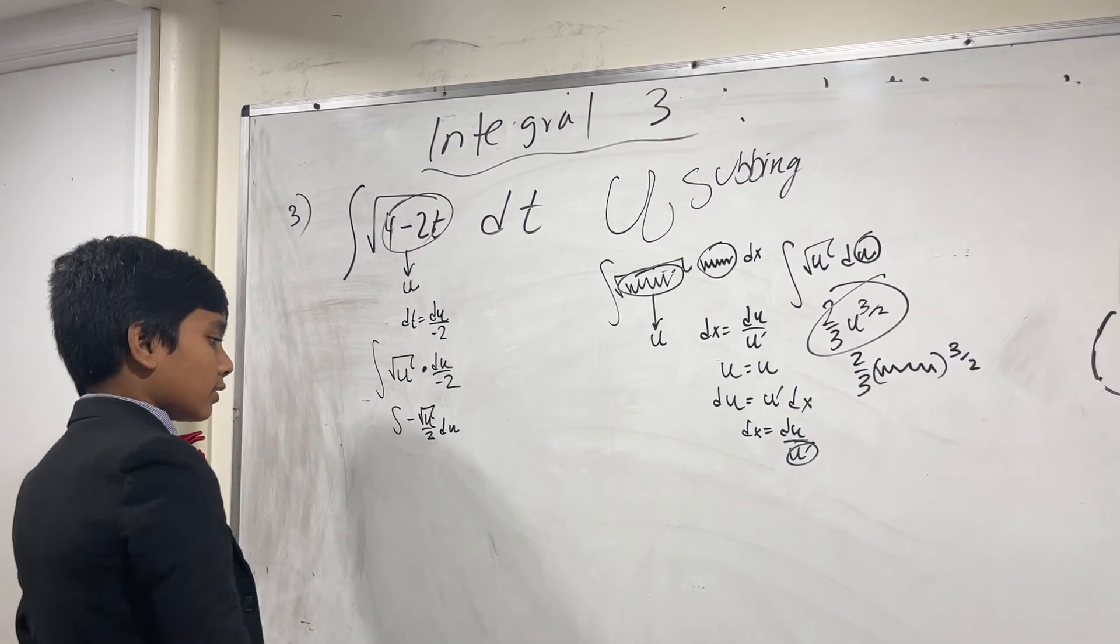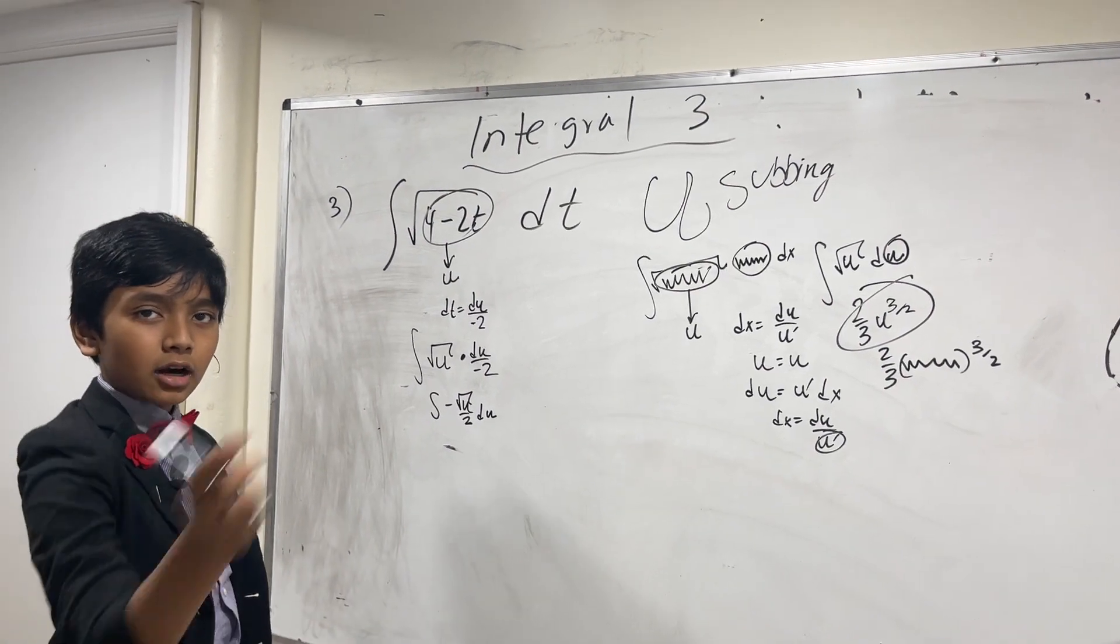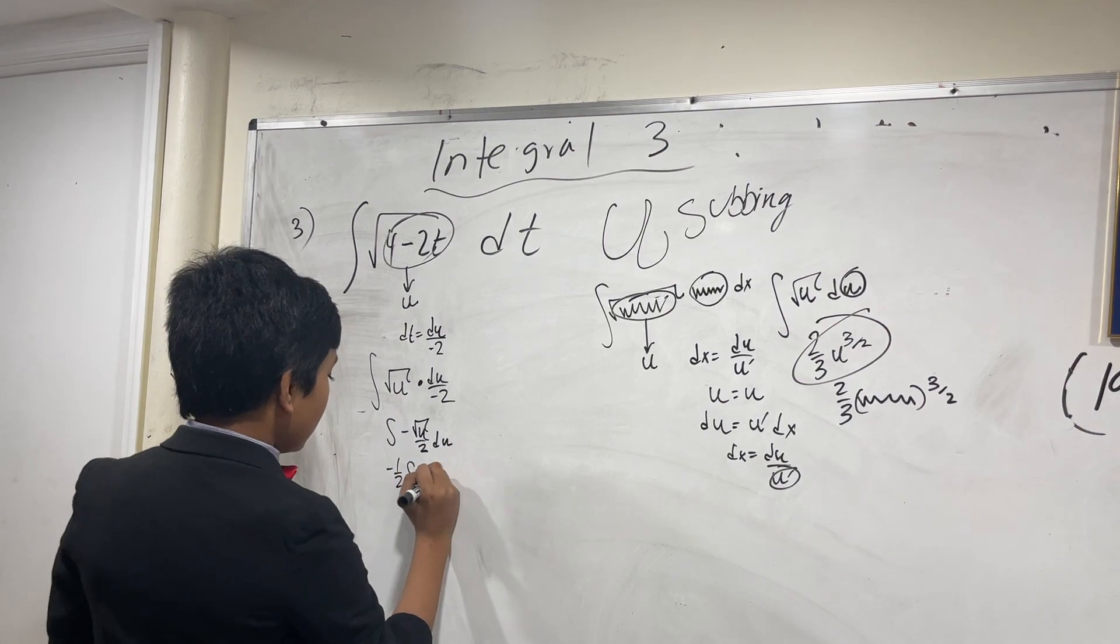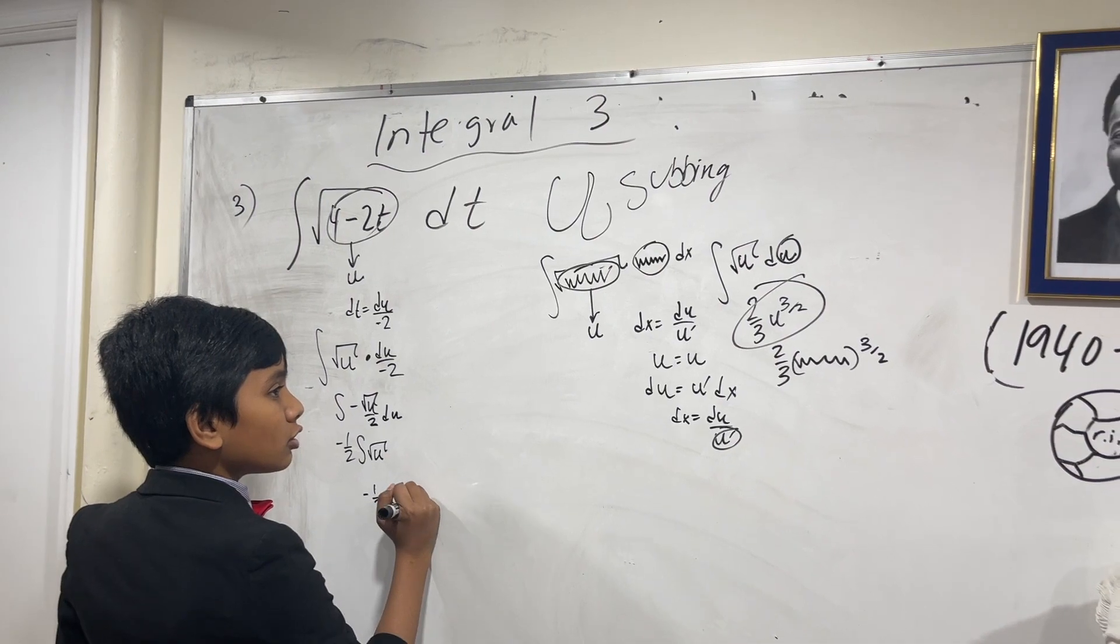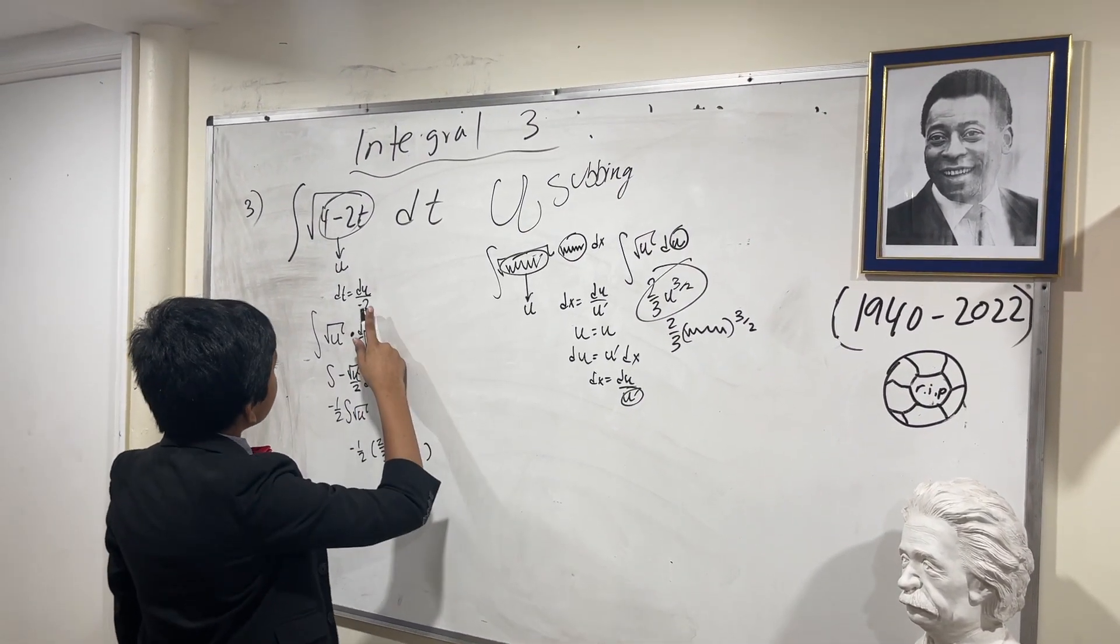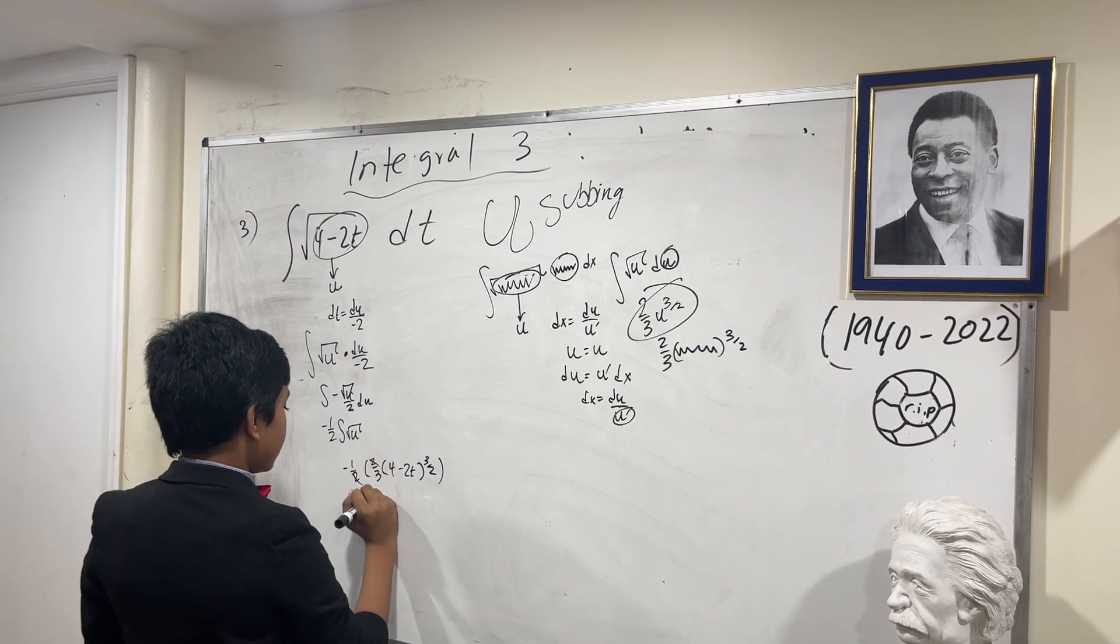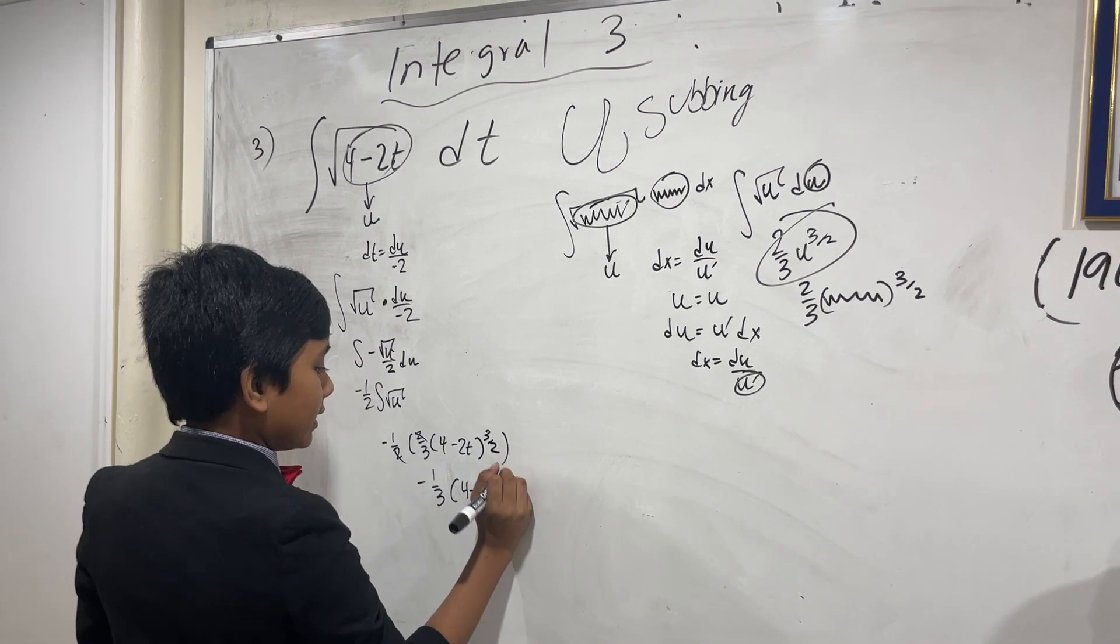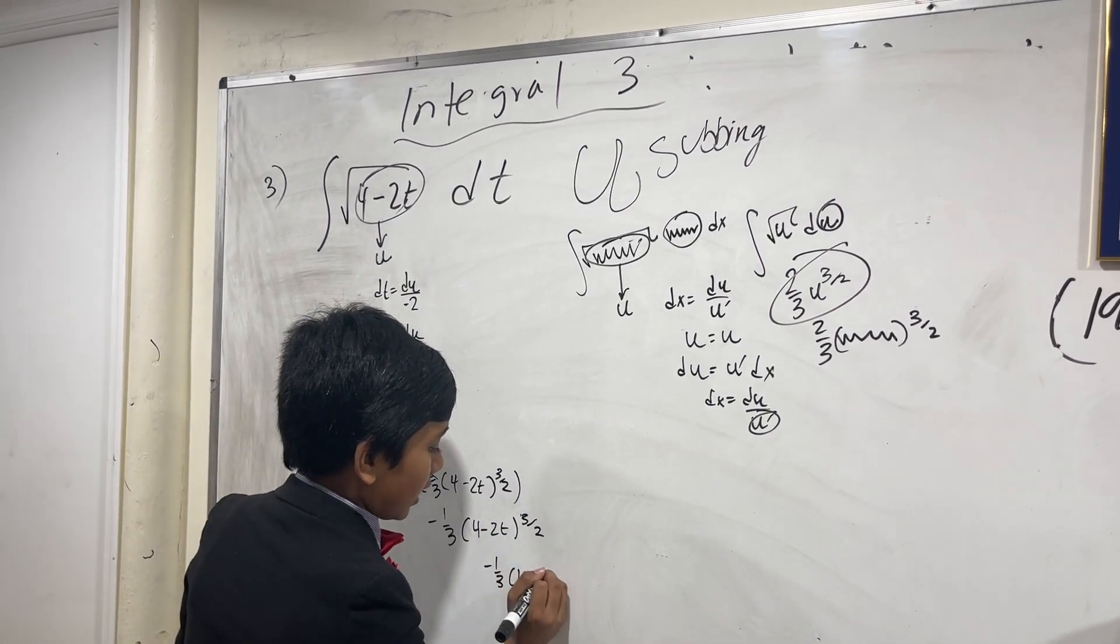So now, because remember that we can take constants outside, this is equal to minus one-half times the integral of u, which makes it minus one-half times two-thirds of—well, what is this?—4 minus 2t to the three-halves. And now we can actually reduce it, and it becomes minus one-third times 4 minus 2t to the three-halves. If you're curious what that really looks like, it looks like this.